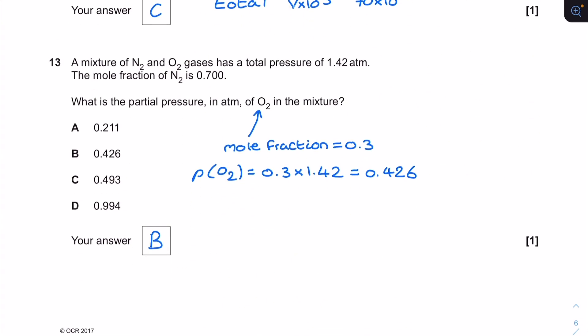Question 13. A mixture of N2 and O2 gases have a total pressure of 1.42 atmospheres. The mole fraction of the N2 is 0.7. What's the partial pressure in atmospheres of O2 in the mixture? Straight away I know the mole fraction for the oxygen is going to be 0.3 because mole fractions have to add up to 1 for a sample of a gas. Partial pressure is then calculated by doing the mole fraction multiplied by the total pressure and so my correct answer here is B.